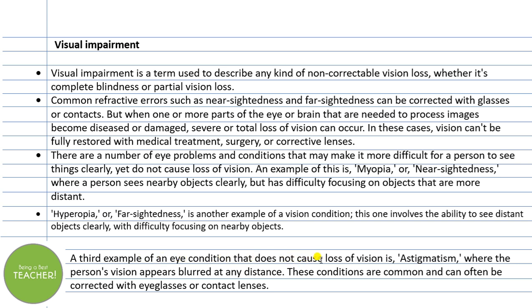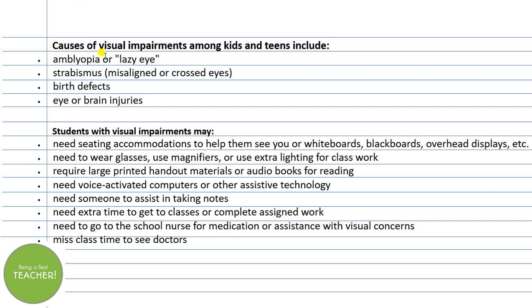A third example of an eye condition that does not cause total loss of vision is astigmatism, another biological term, where the person's vision appears blurred at any distance — things look dhundla (blurry) regardless of how far or near they are. These conditions are common and can often be corrected with eyeglasses or contact lenses — we have solutions for them.